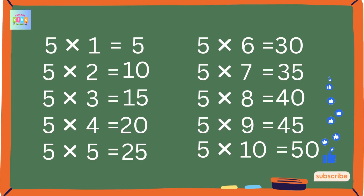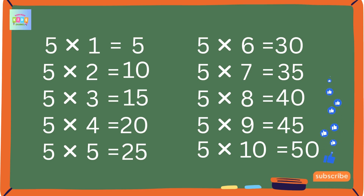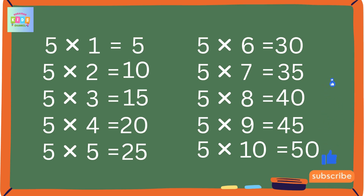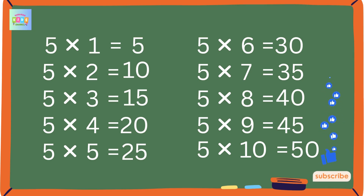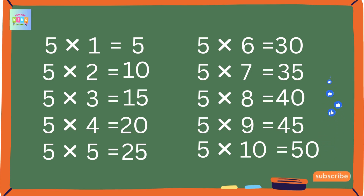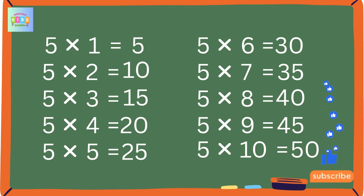5 1s are 5, 5 2s are 10, 5 3s are 15, 5 4s are 20, 5 5s are 25, 5 6s are 30, 5 7s are 35, 5 8s are 40, 5 9s are 45, 5 10s are 50.